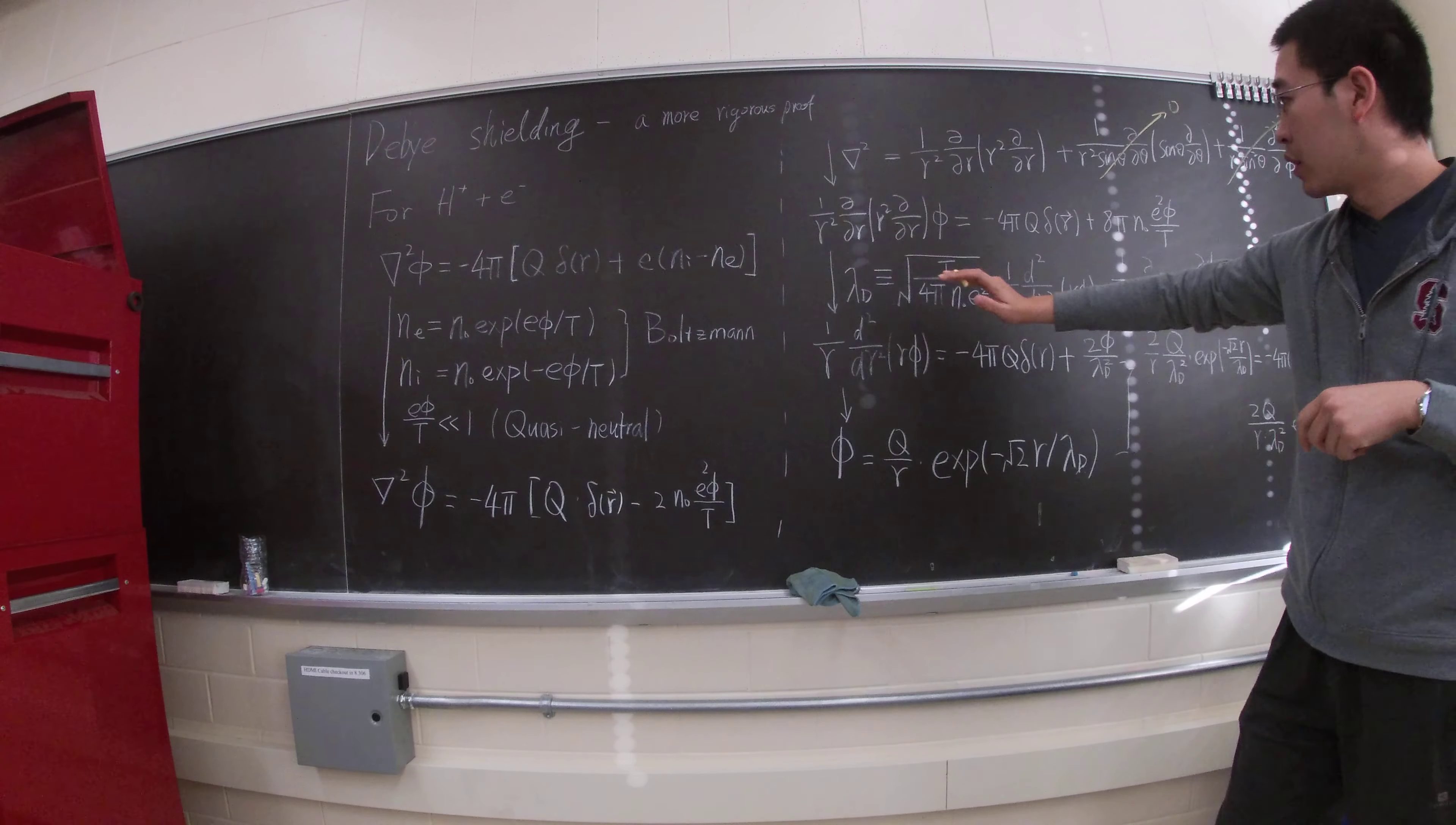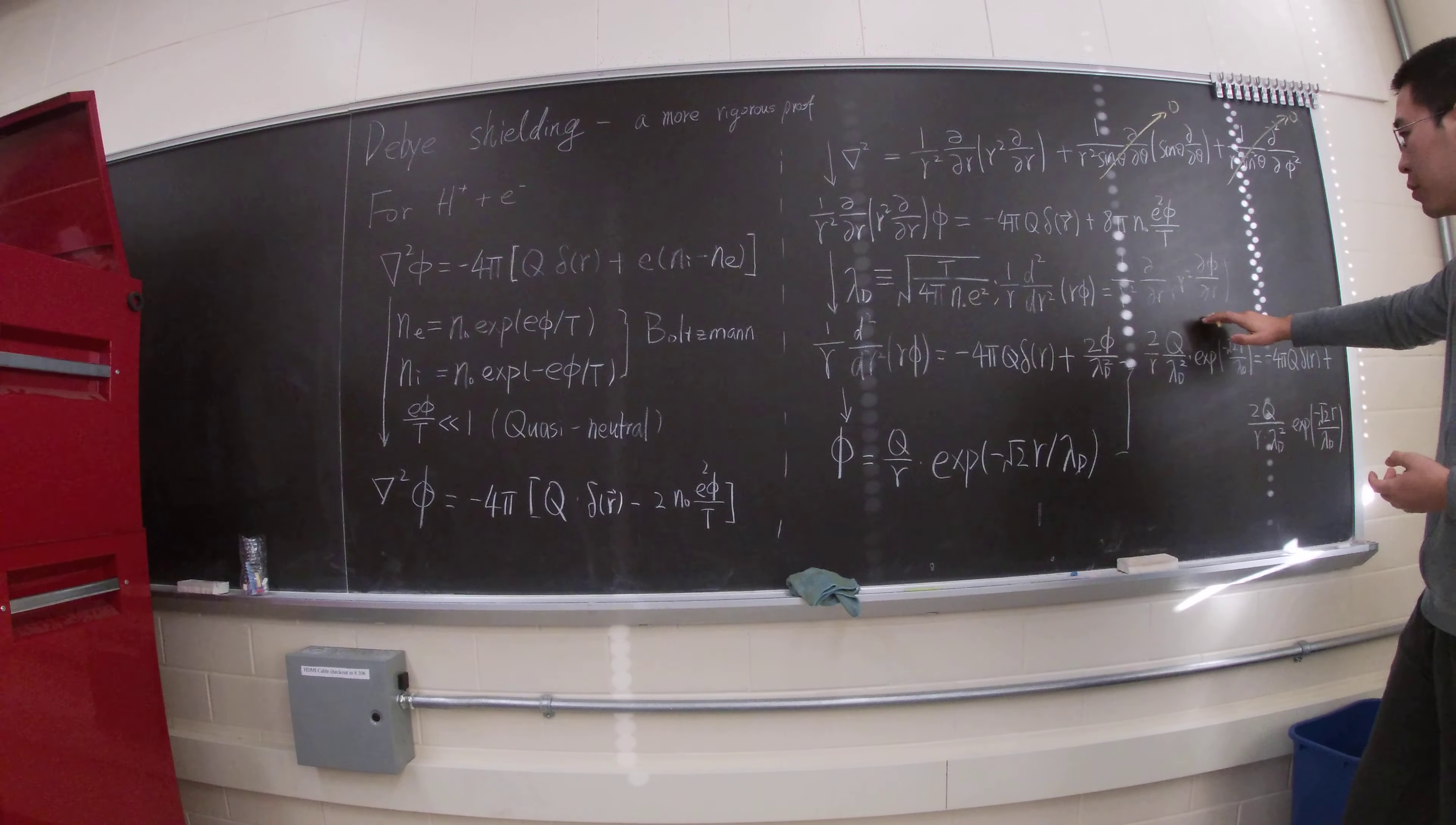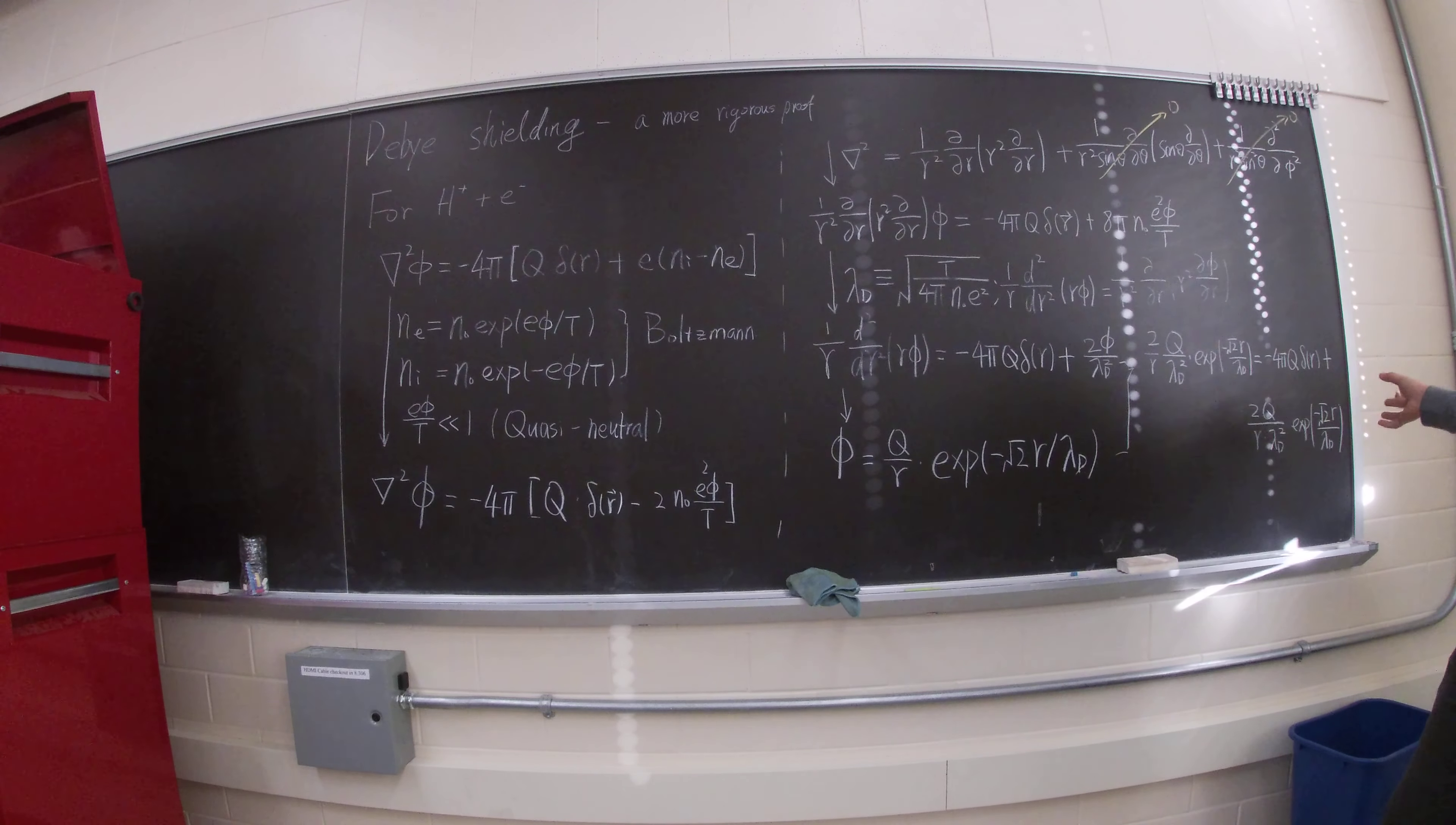Let's define the parameter lambda_d, which you will see what it is pretty soon later. Square root t over 4 pi n_0 e squared. And you can prove it. But I will just express it this way: 1 over r d, d squared over dr squared, r phi equals 1 over r squared d dr, r squared, d phi dr. You can just expand it on both sides, and you can see if this is matched from left to the right.